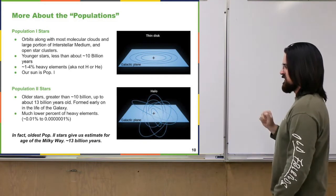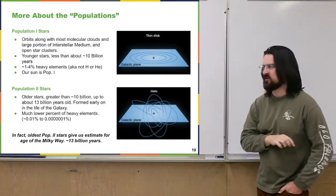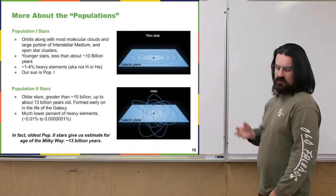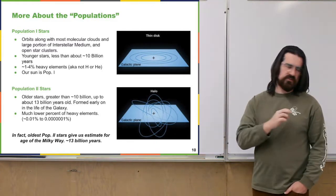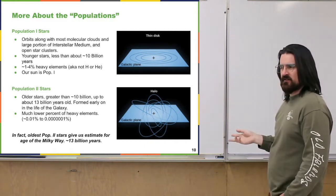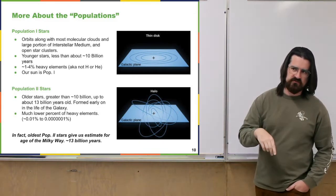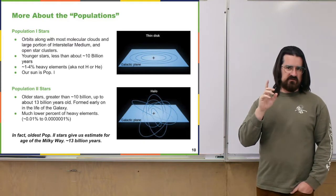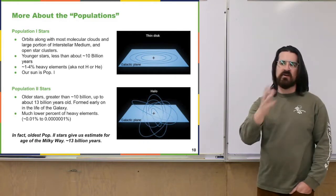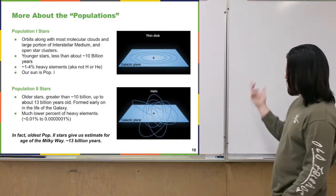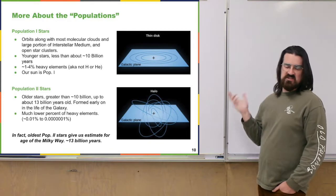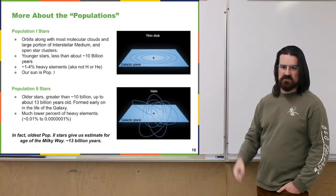It's interesting that some of these population two stars give us a way to estimate the age of the Milky Way. If the oldest stars we've found in the galaxy are around 13 billion years old, that tells us roughly how old the galaxy is — similar to how we used comets and asteroids to estimate the age of our solar system. Some of these really old population two stars in the halo have been around basically since the beginning of the galaxy.